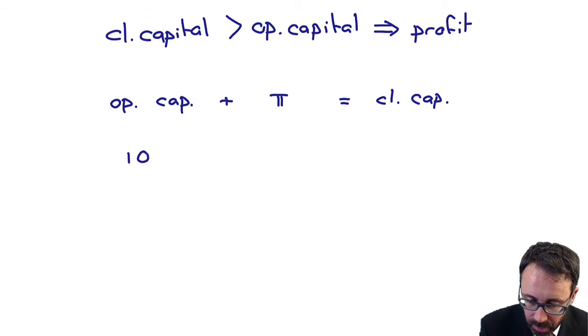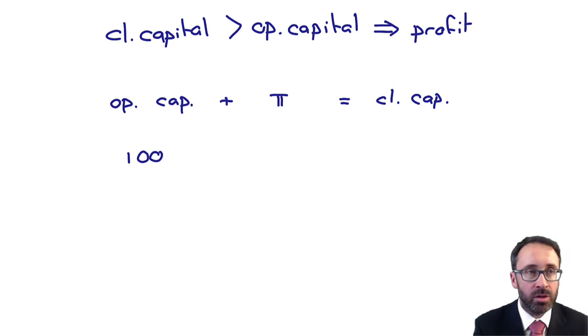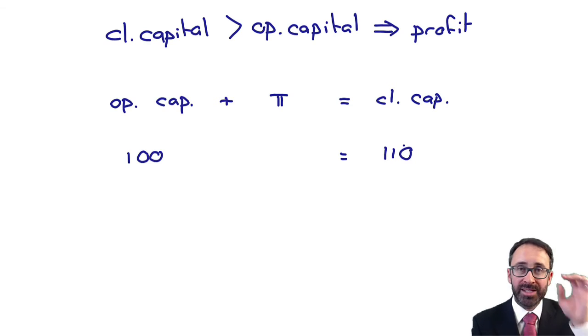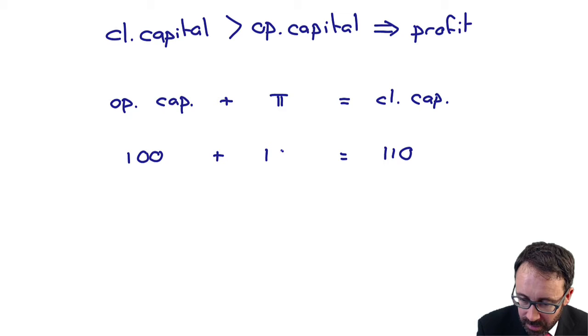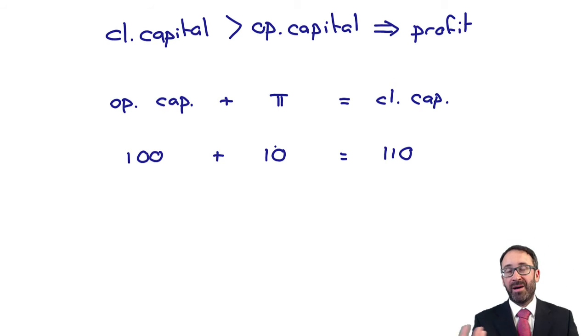If we use some very basic numbers, if your opening capital is 100, your closing capital is 110, and the effects of inflation are not significant, then that balancing figure, the difference, is your profit, which is 10.